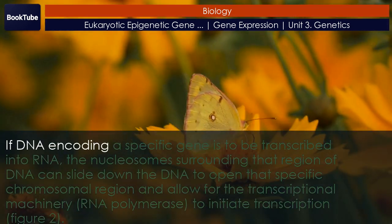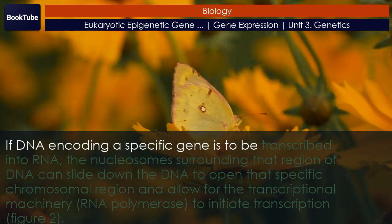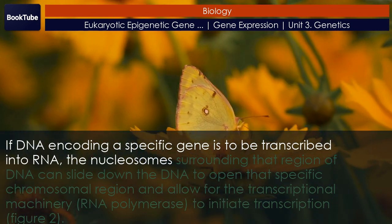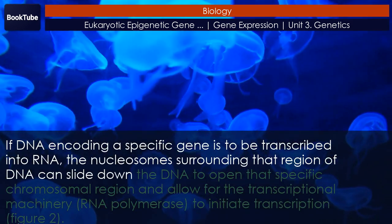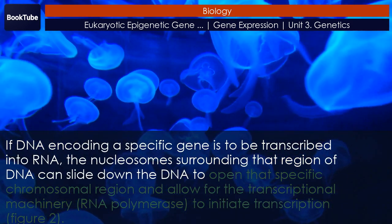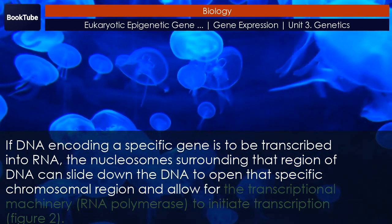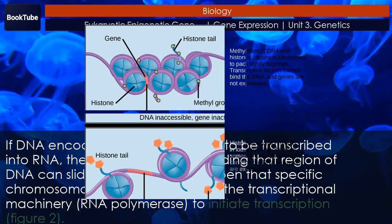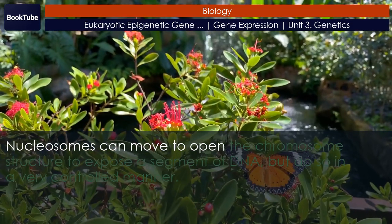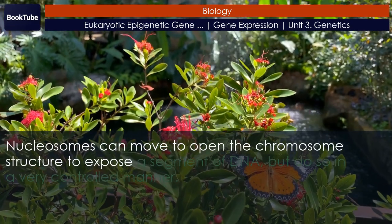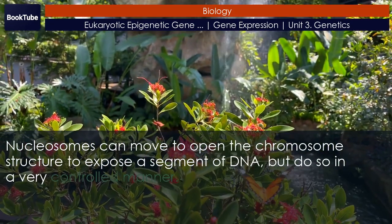If DNA encoding a specific gene is to be transcribed into RNA, the nucleosomes surrounding that region of DNA can slide down the DNA to open that specific chromosomal region and allow for the transcriptional machinery — RNA polymerase — to initiate transcription. Nucleosomes can move to open the chromosome structure to expose a segment of DNA, but do so in a very controlled manner.